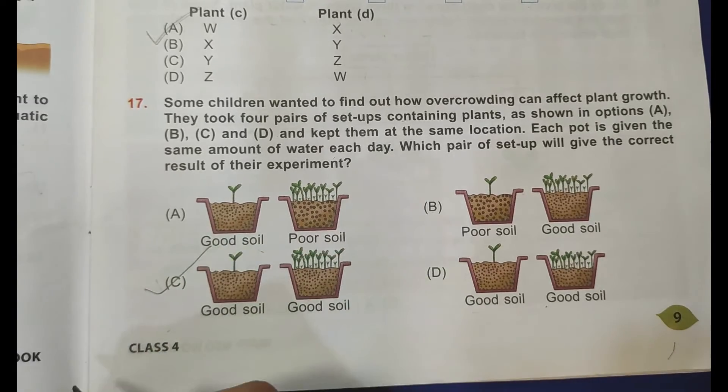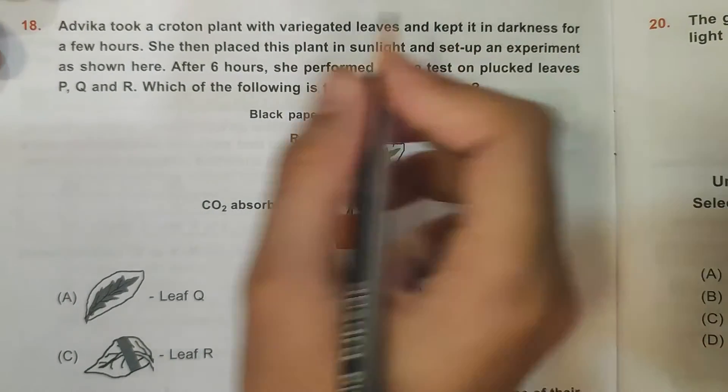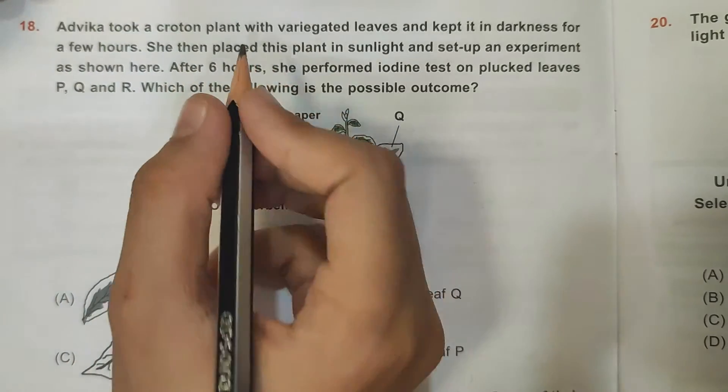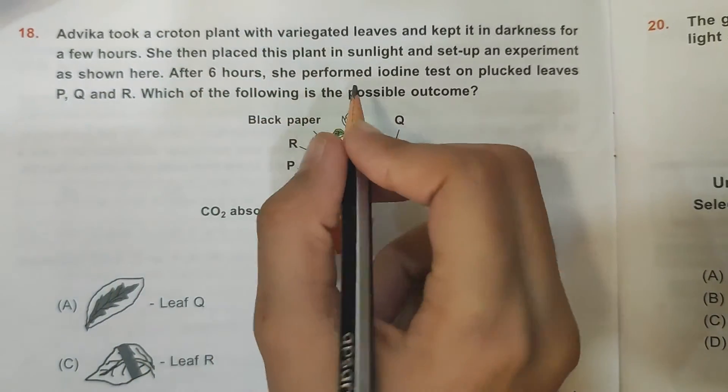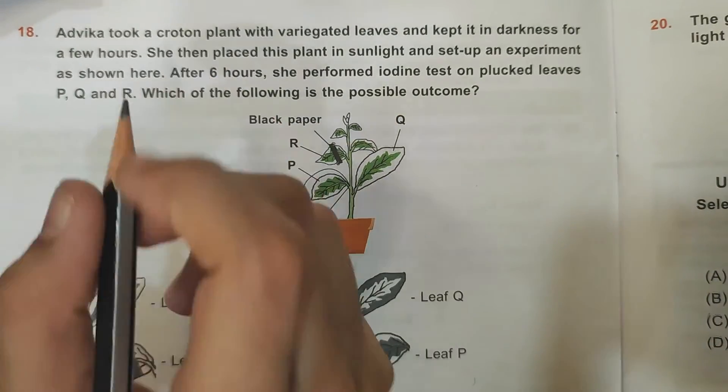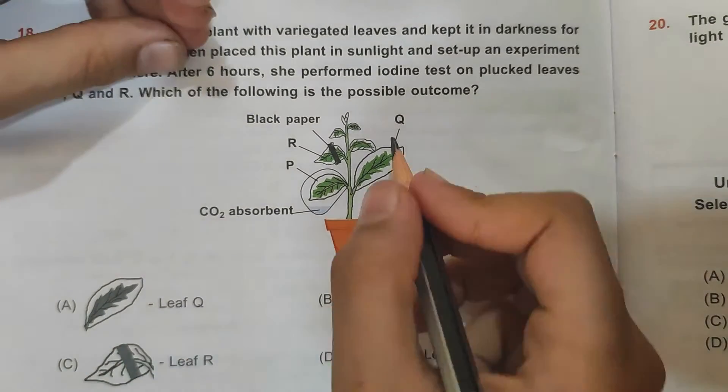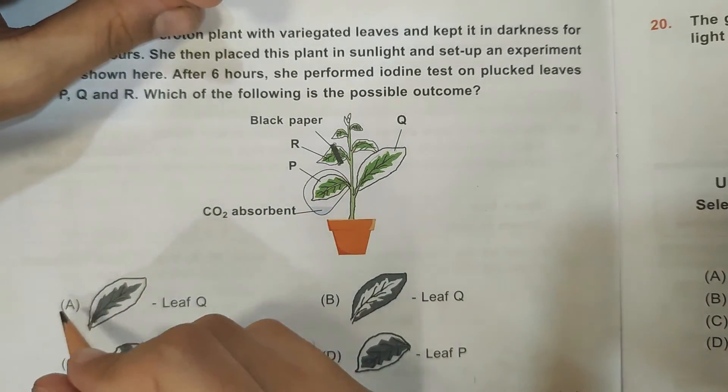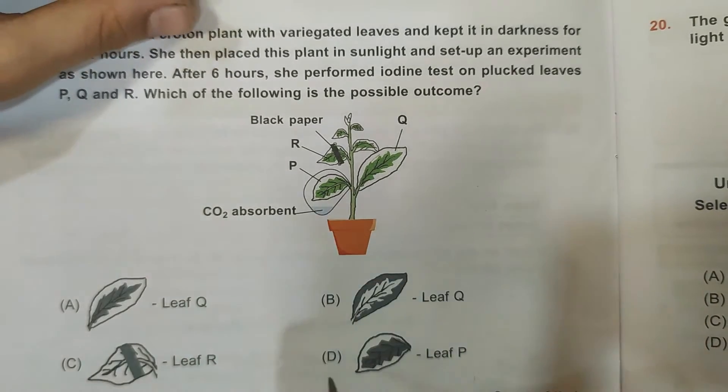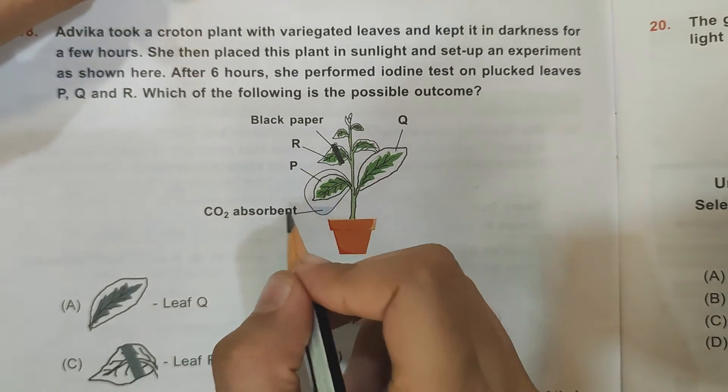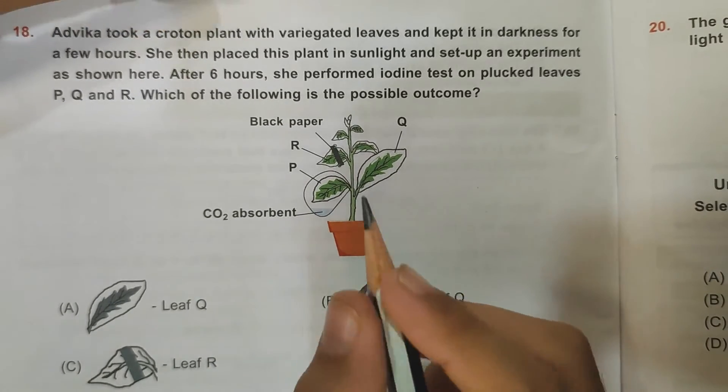She took a potted plant with variegated leaves and kept it in darkness for a few hours. She then placed this plant in sunlight and set up an experiment as shown here. After six hours she performed iodine test on plucked leaves P, Q, and R. Which of the following is the possible outcome? Here is leaf Q and here is only on the veins iodine, so this is correct. In the leaf P also there is iodine only on the veins and this is correct. But in the D option here is CO2, means carbon dioxide absorbed by the leaf, so it will not show any change in color. So A is the correct answer.